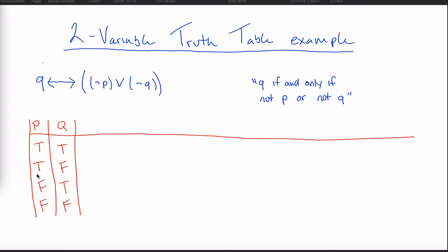A lot of people ask how to remember the order to write the T's and F's in. One way to think about it is that you're paying for your F's. To get the most common order, make the cheapest value — one dollar — the variable furthest to the right, and then double the dollar amount as you move left. So Q is one dollar, P is two dollars. If you had another variable it would be four dollars, then eight dollars, and so on.